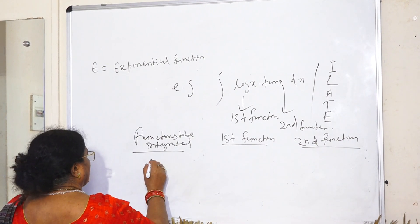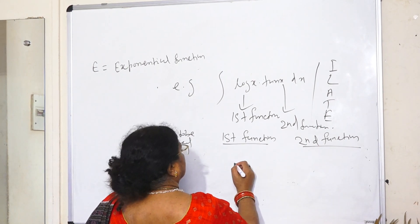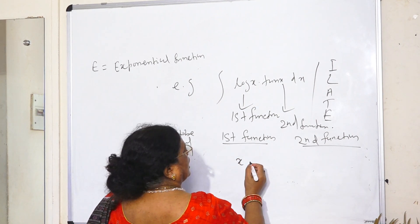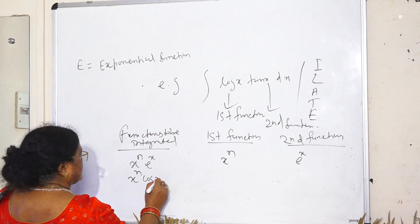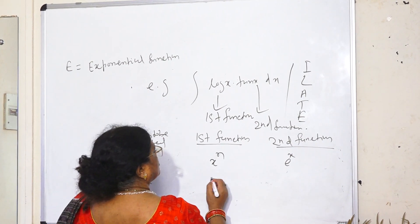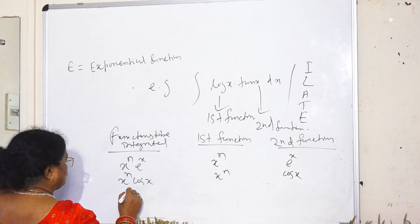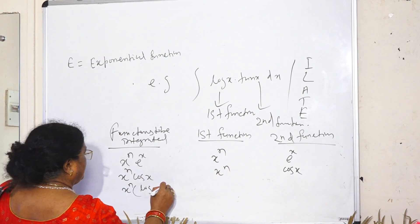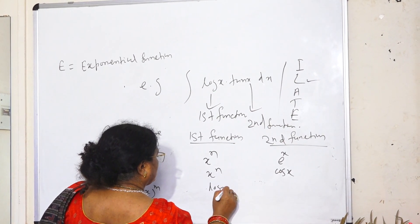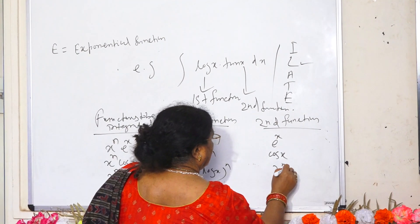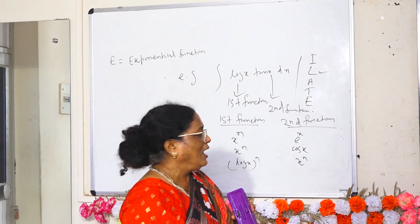If the product of two functions is x to the power m times e to the power x, then the first function is x^m and the second function is e^x. If it is x^m times cos x, then first function is x^m and second is cos x. If it is log x times x^m, then the first function is log x and the second function is x^m. We have to choose carefully.